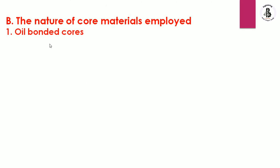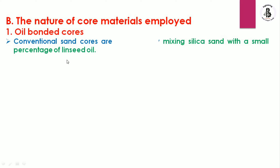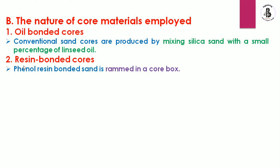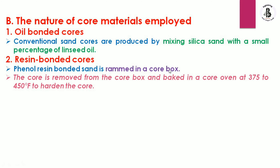The second category is the nature of core materials employed. The first type is oil bonded cores — conventional sand cores are produced by mixing silica sand with a small percentage of linseed oil. The second type is resin bonded cores — phenol resin bonded sand is rammed into a core box and baked in an oven at around 375 to 450 degrees Fahrenheit to harden the cores.